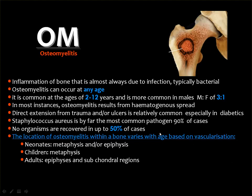Staphylococcal aureus is the most common pathogen, isolated in about 90 percent of cases; however, in up to 50 percent of cases no organisms can be recovered. The location of osteomyelitis has some age distribution: in neonates it affects the metaphysis and/or epiphysis, while in children it predominantly affects the metaphysis, and in adults there is a different distribution.